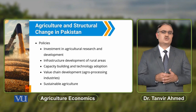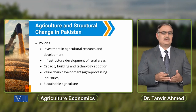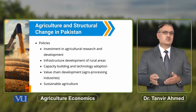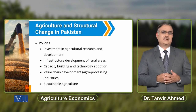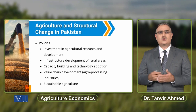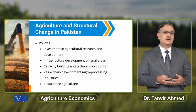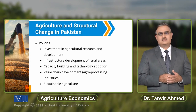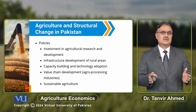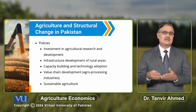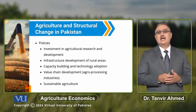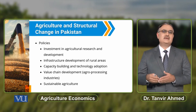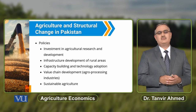By improving value chain development — that is, by establishing agro-processing industries in rural areas — we can promote the production of agricultural output. We should also formulate policies to promote sustainable agriculture, which can improve the environment in the long run and has positive impacts on agricultural productivity. In conclusion, when there is improvement in the agricultural sector, there are structural changes in the economy of Pakistan, and because of those structural changes, there is improvement in the living standards of the people.